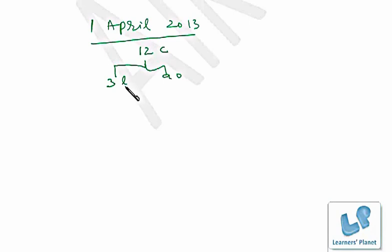As 1 leap year has 366 days, that means 52 weeks plus 2 days. That means per leap year, 2 odd days are there. So for 3 leap years, 6 odd days will be there.